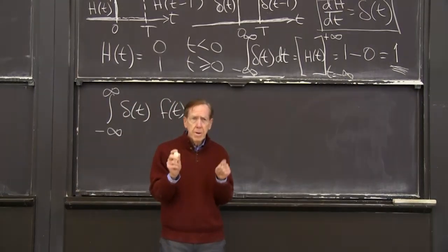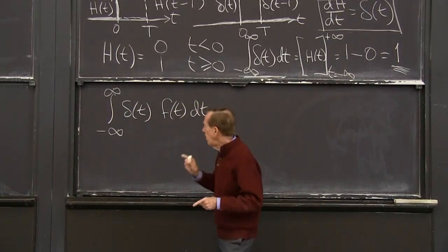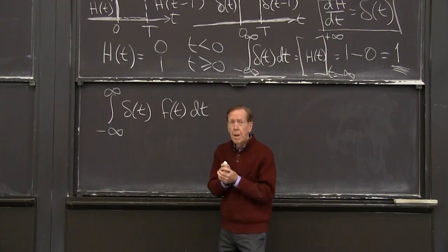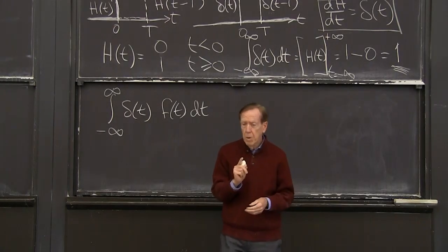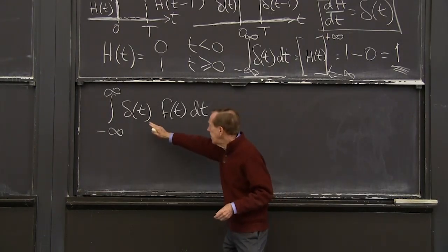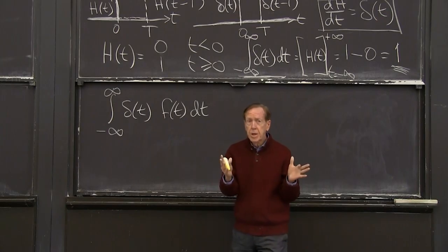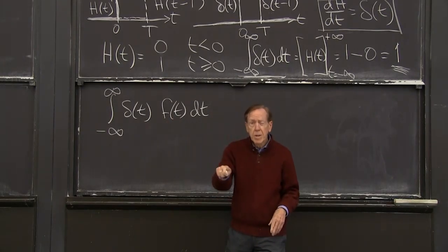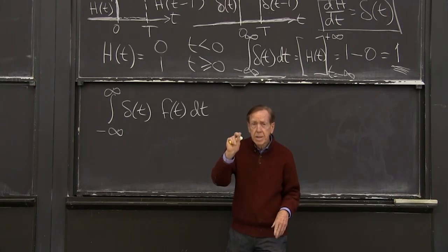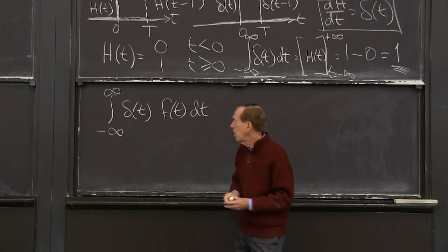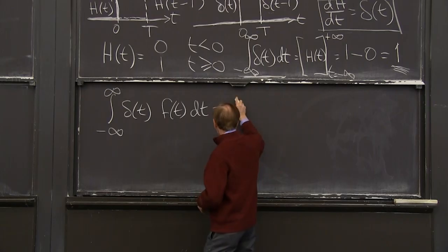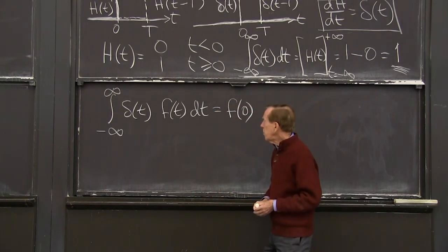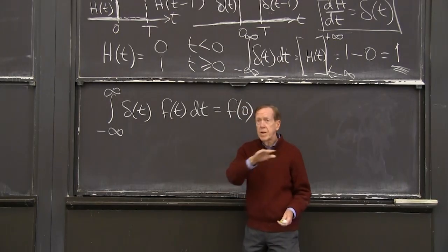That's something we'll need to be able to compute. What's the right integral for that? And again, delta is doing everything at one moment, at t equals 0. At that moment, t equals 0. At that moment, when t is 0, and that's the only place any action is happening, f of t is f of 0. It's whatever value it has at that point t equals 0. And that's the answer, f of 0.